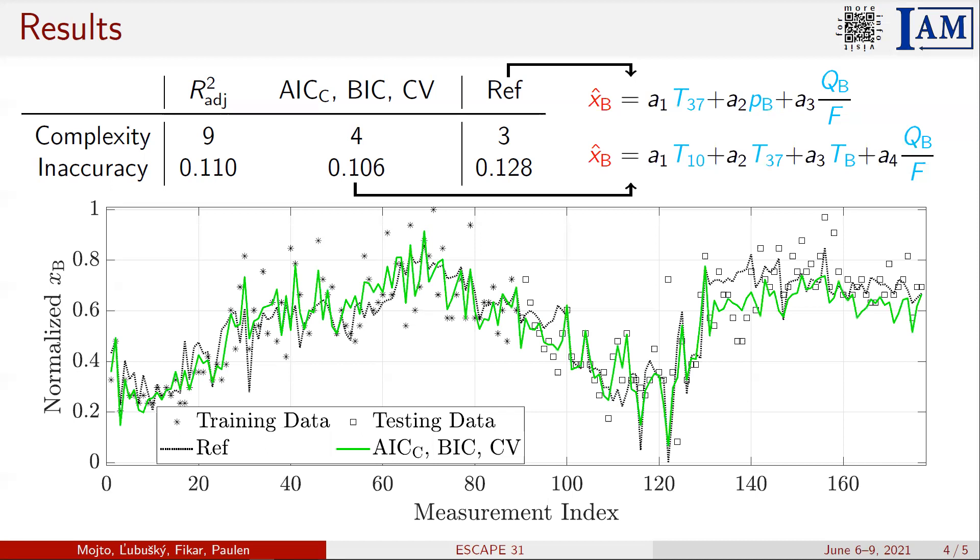We can divide the testing set into the following two sections. The first section, located in the first half of the testing set, is characterized by the worst performance of the referential soft sensor compared to the soft sensor designed by subset selection. However, the performance of the designed inferential sensor is considerably worse than the referential soft sensor in the second half of the testing set.